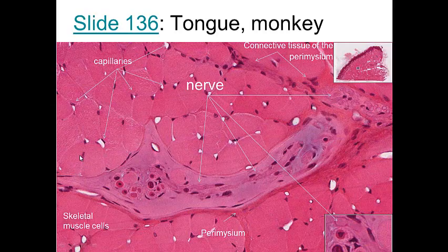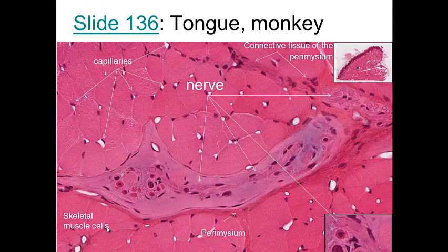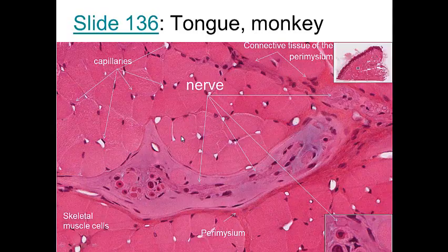Looking at skeletal muscle, we see nuclei on the periphery and capillaries in between the cells. The connective tissue surrounding groups of cells is the perimysium. Between individual cells is the endomysium. Muscle cells are innervated — more than one cell can be innervated by the same nerve. The motor end plates are where the nerve innervates the muscle cells, and one nerve innervates more than one muscle cell.